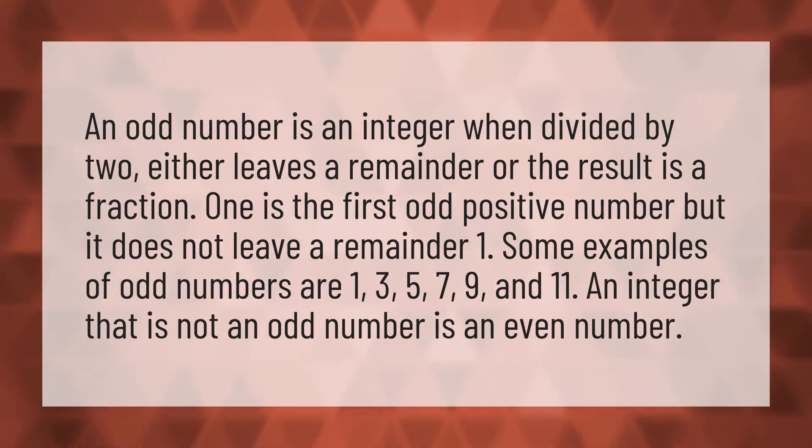Some examples of odd numbers are 1, 3, 5, 7, 9, and 11.